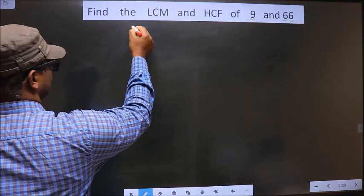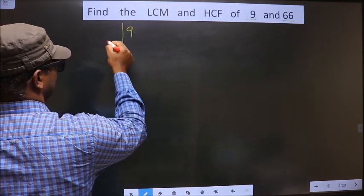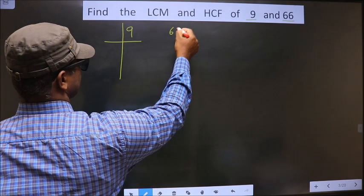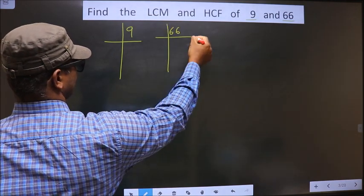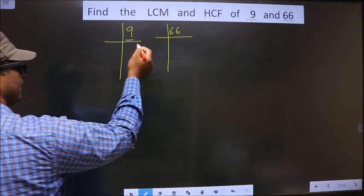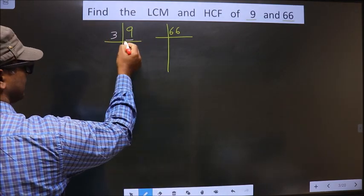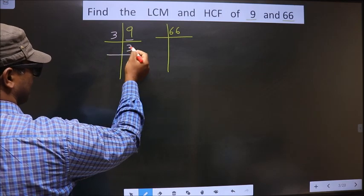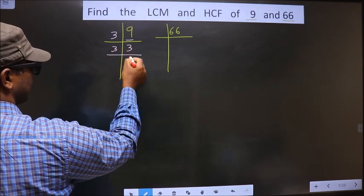That is 9 and 66. Now, here we have 9. 9 is nothing but 3, 3 is 9. Now 3 is a prime number, so 3 and 1.